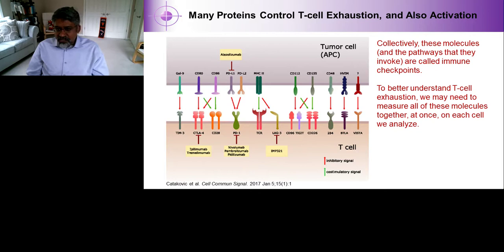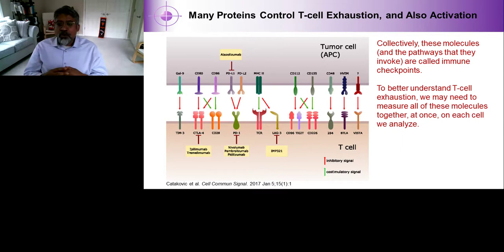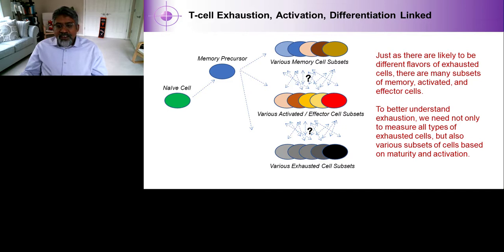There are many proteins that control T-cell exhaustion and activation beyond the common therapeutic targets. In fact, there are lots of molecules such as TIGIT, 2B4, BTLA, VISTA, CD96, and LAG3 that either provide inhibitory signals or co-stimulatory signals. Collectively, these are called immune checkpoints, which is why another term for these therapies is immune checkpoint therapy. To better understand T-cell exhaustion, we really need to measure all of these markers at once, as they're all having a biological effect in the tumor microenvironment, and we should be doing that on each of the cells we analyze.